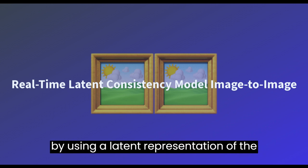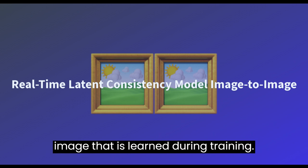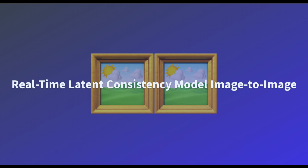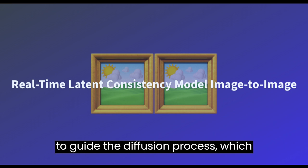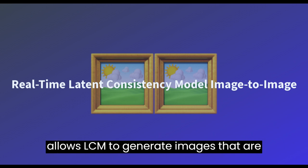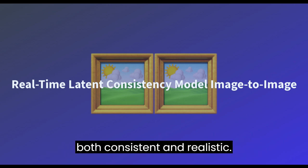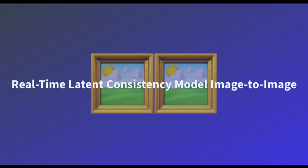It does this by using a latent representation of the image that is learned during training. This latent representation is then used to guide the diffusion process, which allows LCM to generate images that are both consistent and realistic.